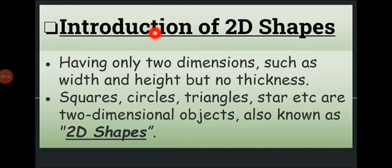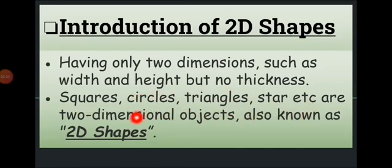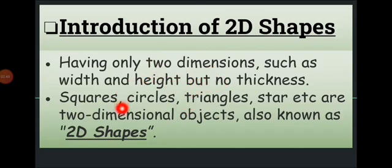Now let me introduce 2D shapes. 2D shapes have only two dimensions — width and height — but no thickness. Squares, circles, triangles, stars, etc. are two-dimensional objects, also known as 2D shapes. They have a flat surface with two dimensions, and some examples are squares, circles, triangles, stars, and many more. Today we will learn them and their properties.